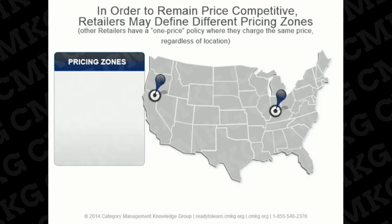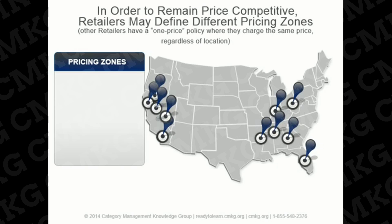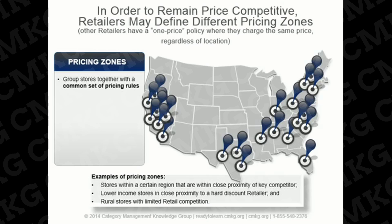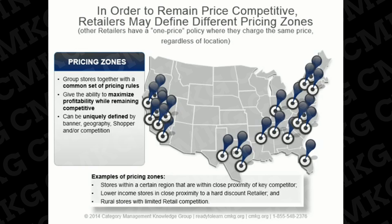In order to remain competitive on price, retailers may define different pricing zones across a region, where stores are grouped together that have a common set of pricing rules. For example, stores within a certain region that are in close proximity to a certain competitor may be in a price zone group. Lower income stores in close proximity to a hard discount retailer may require lower prices than other zones. Price zoning gives the ability to maximize profitability while remaining competitive. Determining an optimal price strategy through zone configuration requires a deep understanding of factors like banner, geography, shopper, and proximity to competition. For commodity categories like milk, butter, and eggs, retailers may price by store instead of by zone to ensure competitiveness.